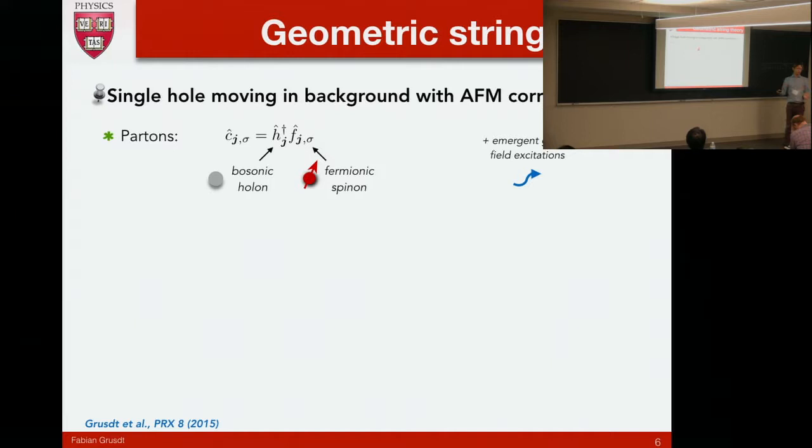The idea is I want to start with introducing partons. The simplest way to do it is I simply write the fermion operator as a holeon, or in this case I choose a bosonic holeon and fermionic spinons. You'll see in the end these statistics don't really matter. The way of writing it like this allows for redundancy.